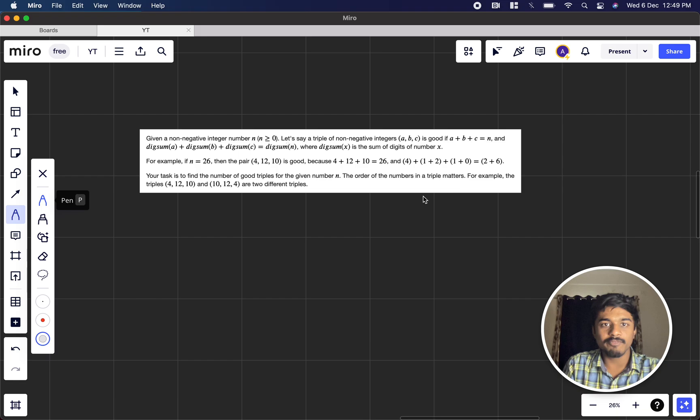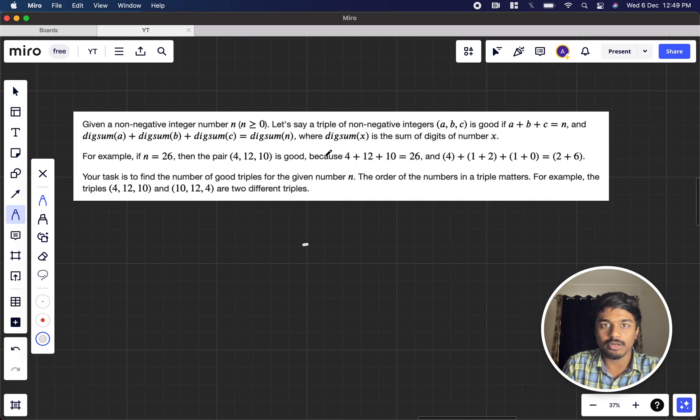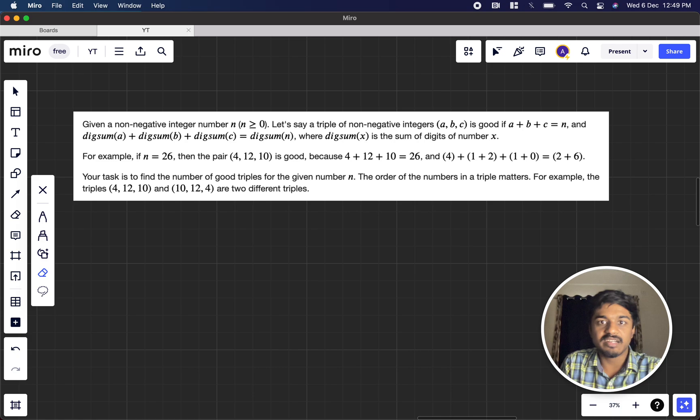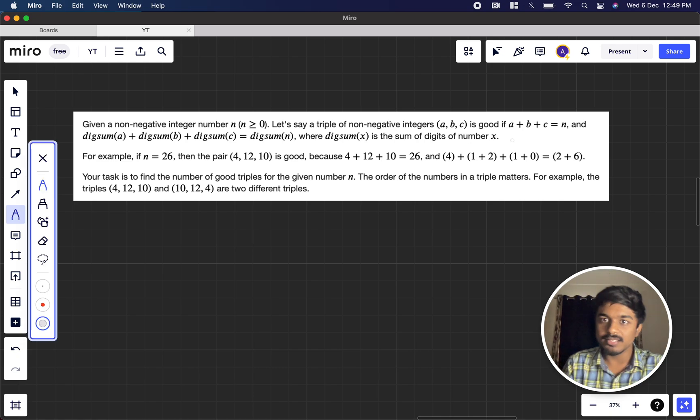We'll be given a non-negative integer n, where n is greater than or equal to 0. A triple of non-negative integers is good if the number is made up of three integers a, b, c, and the digit sum of each of the numbers on the LHS and the RHS are the same.